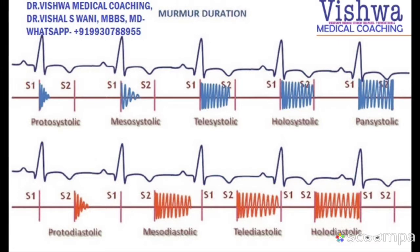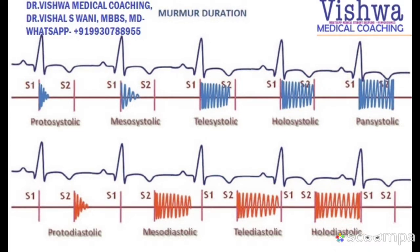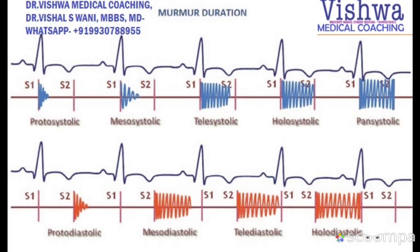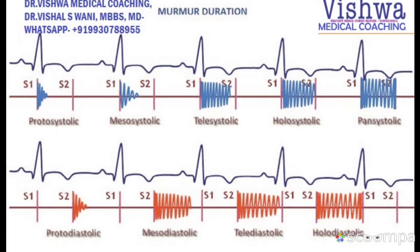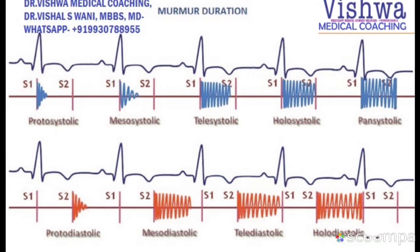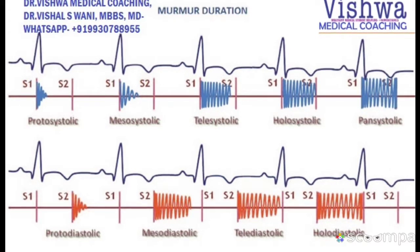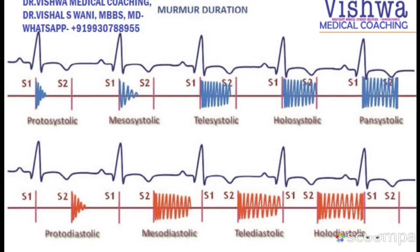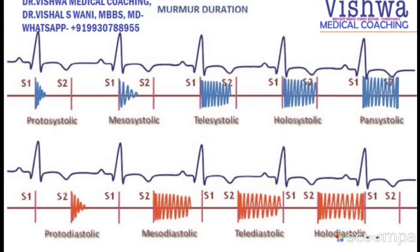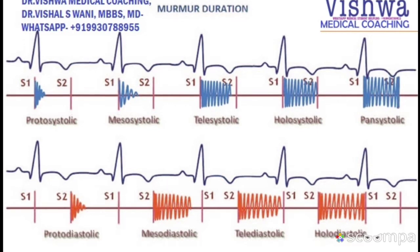Murmurs are the abnormal sounds which are heard when you auscultate the heart. When you auscultate the heart, the prominent sounds heard are the normal heart sounds called the first heart sound and second heart sound, commonly called S1 and S2. As you see in the picture, S1 and S2 are the first and second heart sounds. S1 is heard because of the closure of the atrioventricular valves at the beginning of systole, and S2 is heard because of the closure of the semilunar valves at the beginning of diastole.